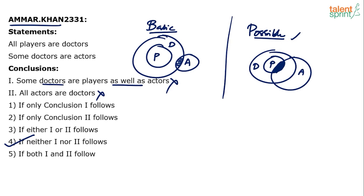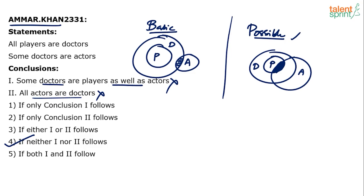Both the conclusions can be considered as possibilities, but these are not definite. Some doctors are players as well as actors is not definite, it is only possible. All actors are doctors is not definite, it is only possible. So both the conclusions are wrong — does not follow. Neither one nor two follows.